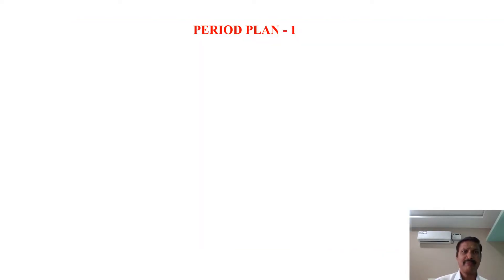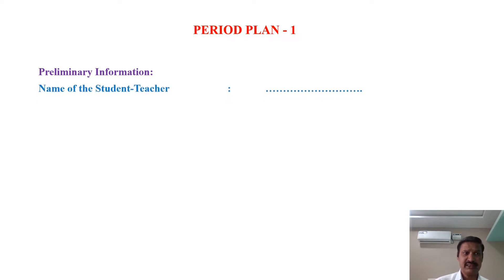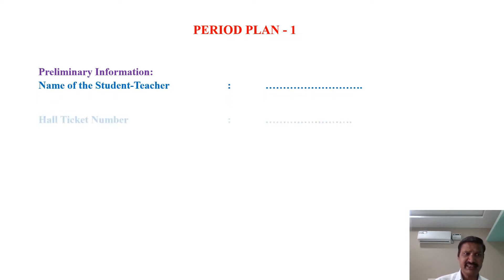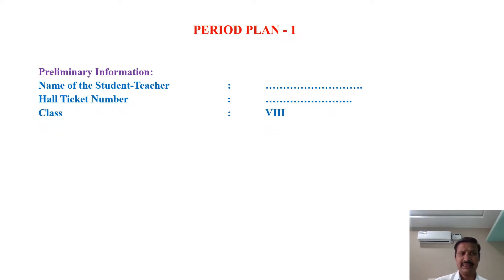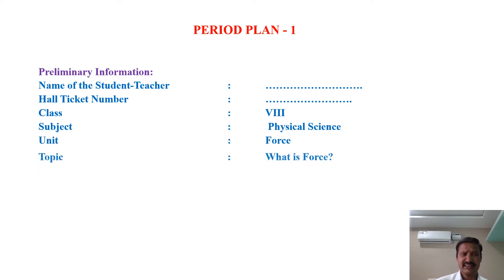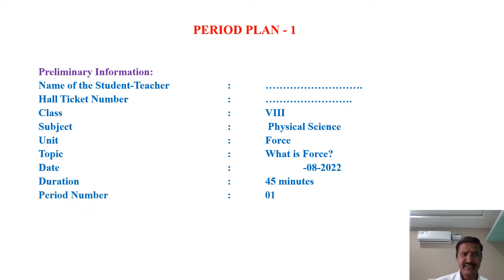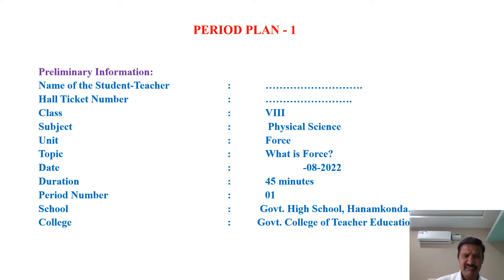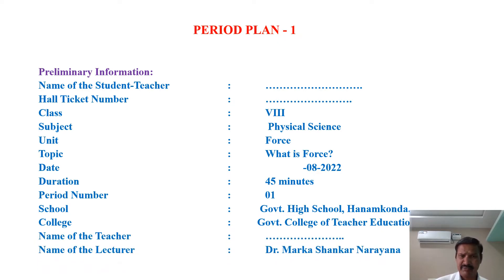First, in preliminary information, you have to write the name of the student teacher, hall ticket number, class, subject, unit, topic, date, duration, period number, school in which you are going to teach, college in which you are studying, name of the teacher, and name of the lecturer.